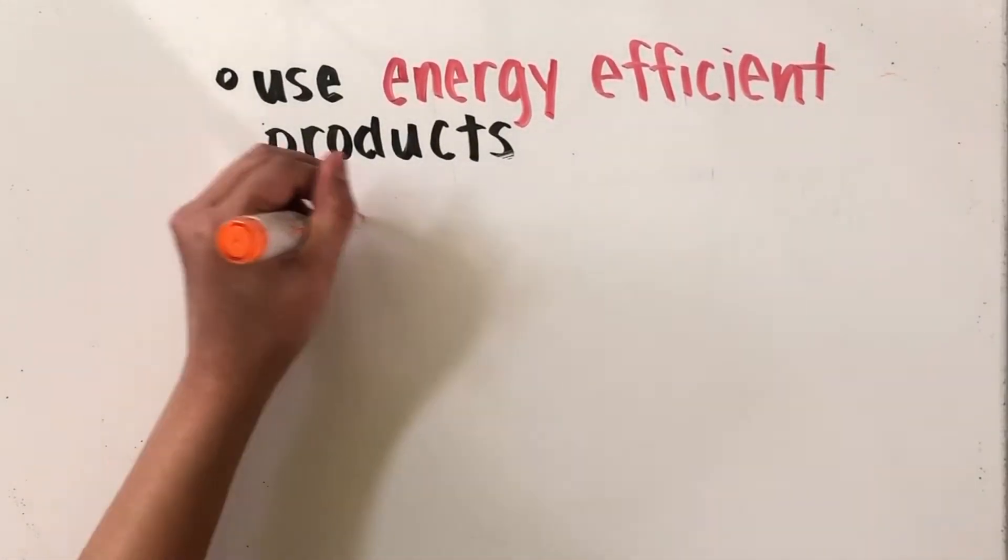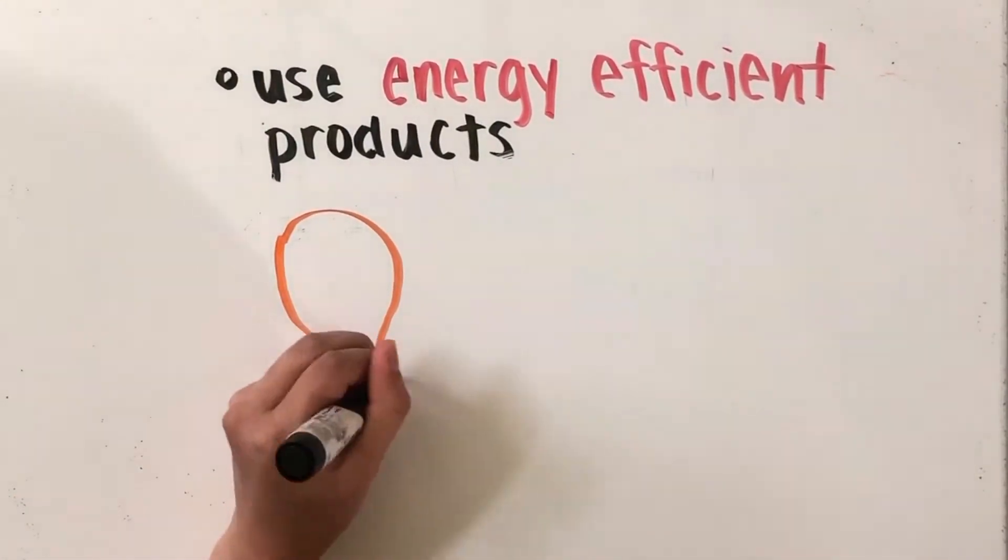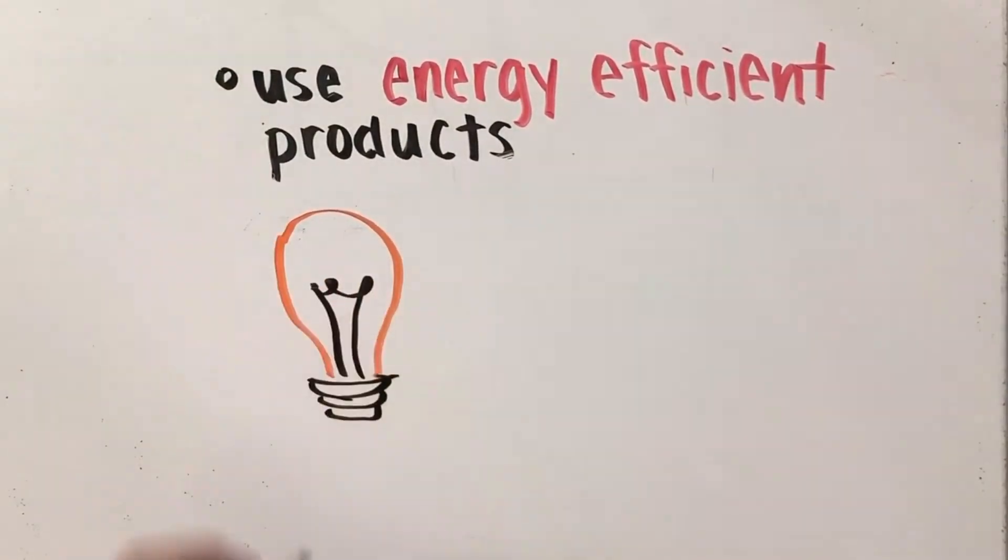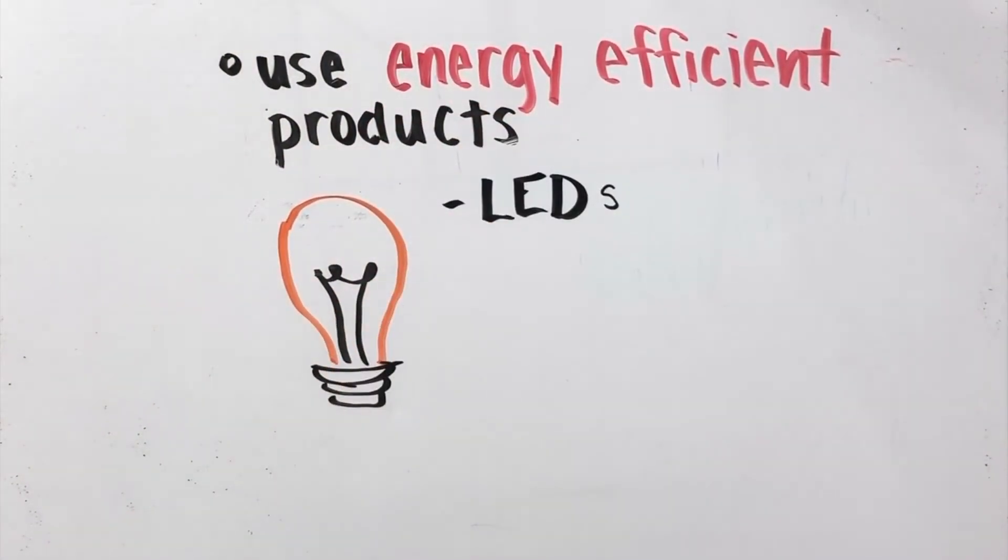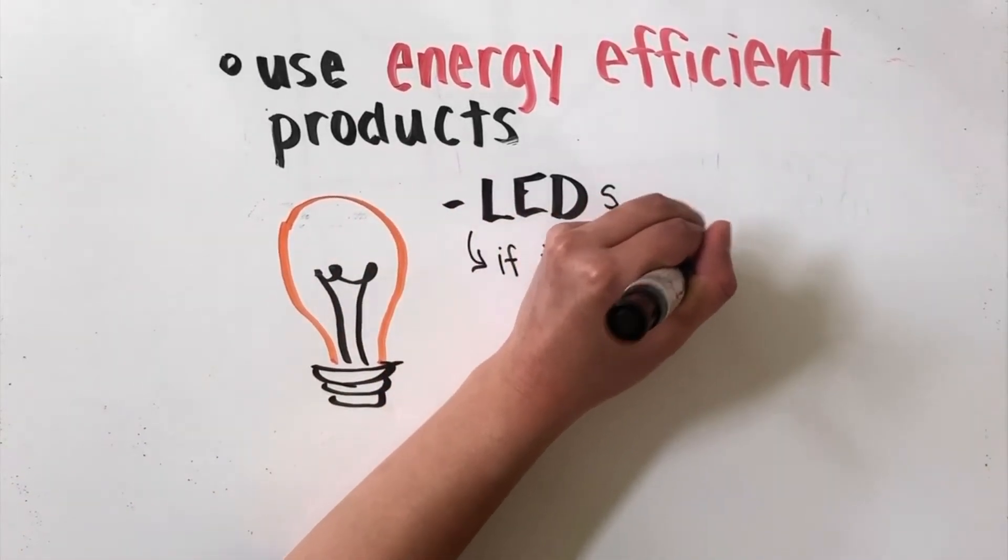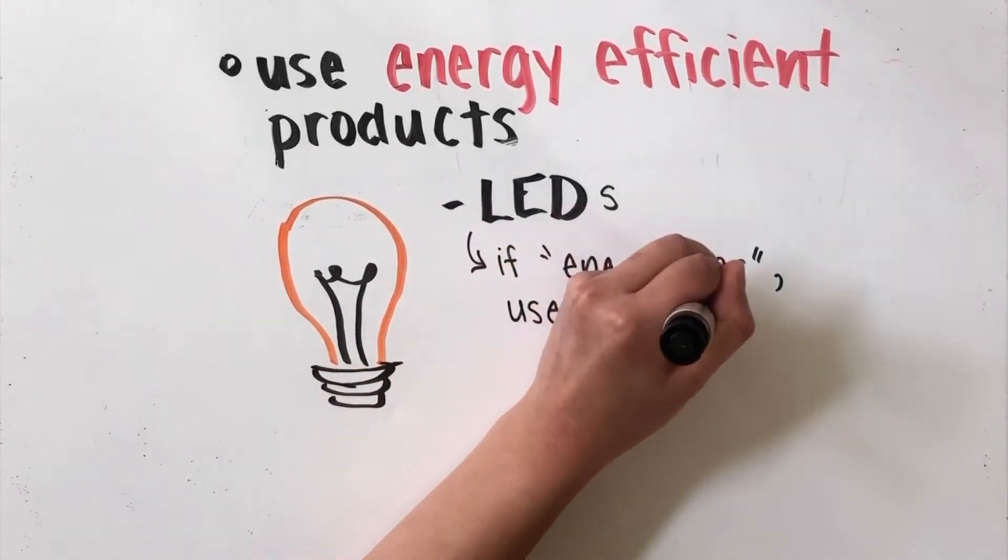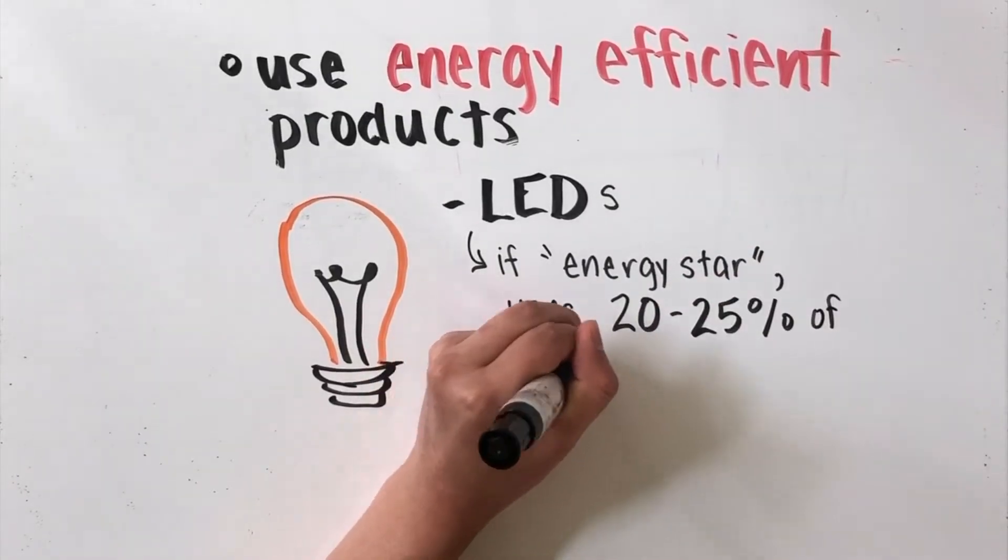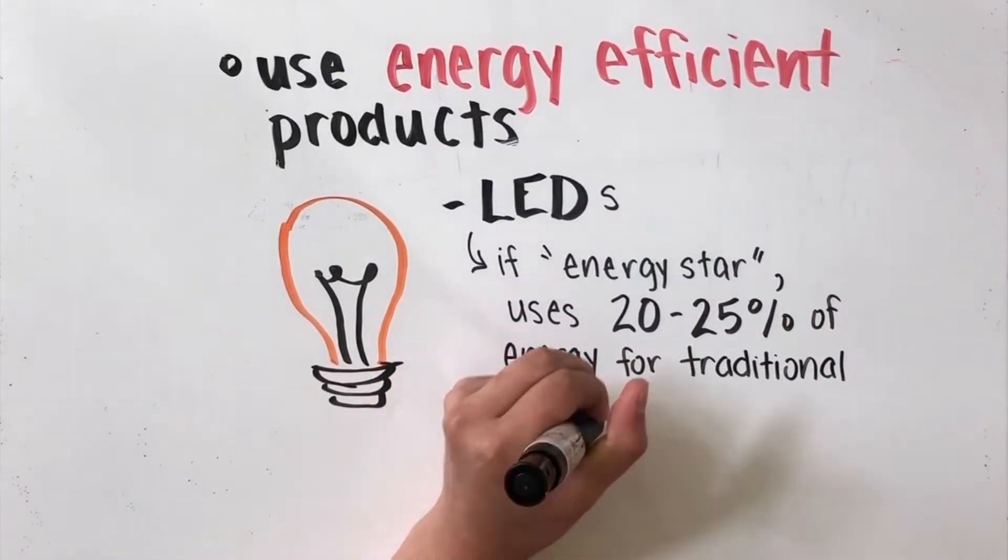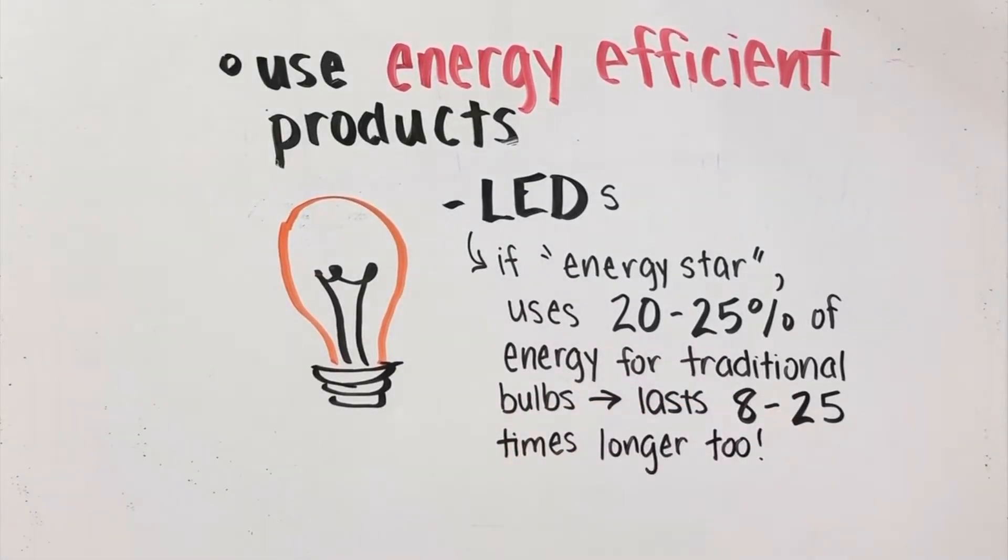Advances in human technology has also contributed to more energy-efficient light products. LEDs, or light-emitting diodes, use about 20 to 25% of the energy that a traditional light bulb does. LEDs will even last 8 to 25 times longer than a traditional light bulb, allowing you to save money in the long run.